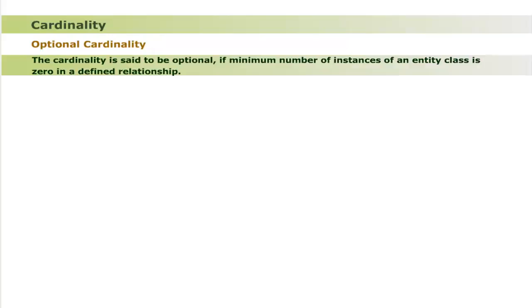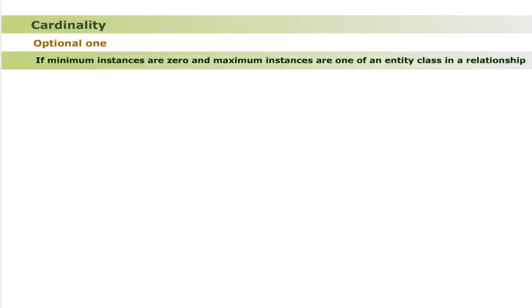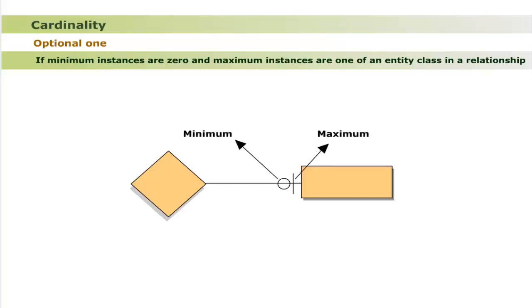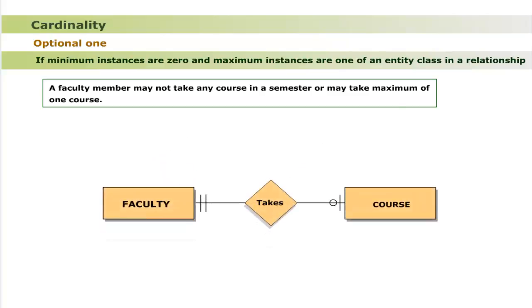Optional cardinality means the minimum number of instances of an entity class is zero in a defined relationship. For example, a faculty member may not take any course in a semester. Optional one cardinality means minimum instances are zero and maximum instances are one of an entity class in a relationship. For example, a faculty member may not take any course in a semester, or may take a maximum of one course. The cardinality of entity class Course is optional one, as the minimum course value is zero and maximum is one in the relationship 'take'.